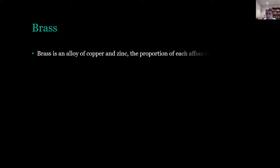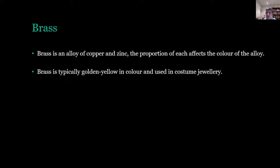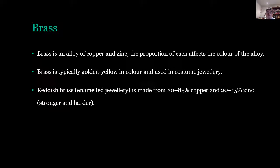Brass is another alloy, another copper alloy. In this case the addition of zinc into the structure of the copper, and the proportion of each of these also affects not only the color of the alloy. So brass, like bronze, is a yellowy color which is a contrast to the semi-pink color of copper. But also some slight changes in the amount can also change the color. So we can also have a reddish brass which is used in enamel jewelry and it's a little stronger and harder as a result of that extra zinc.